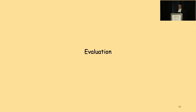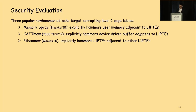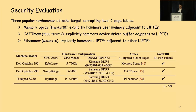Here are our evaluation results. We deploy Soft TRR into one system against three representative kernel privilege escalation attacks. Memory Spray hammers user memory adjacent to L1 PT pages. CAT-PWN hammers device driver buffers adjacent to L1 PT pages. PT-Hammer implicitly hammers L1 PT pages adjacent to other L1 PT pages. Memory Spray and CAT-PWN are explicit Rowhammer attacks; PT-Hammer is the only published implicit Rowhammer attack. In our experiments, each attack targets 50 L1 PT pages. Without Soft TRR, each attack succeeds; with Soft TRR, each attack fails to induce bit flips in the 50 L1 PT pages, indicating those attacks have been mitigated.